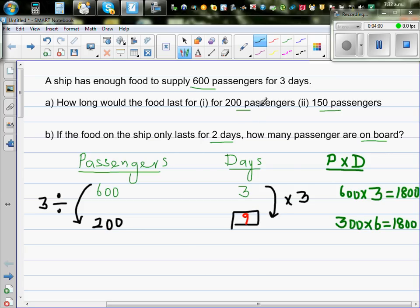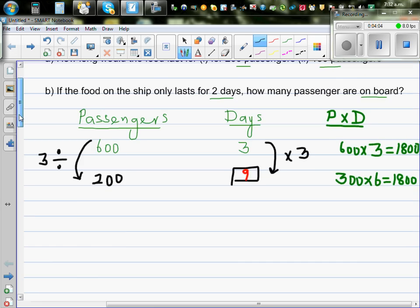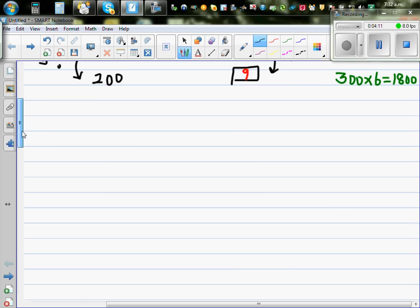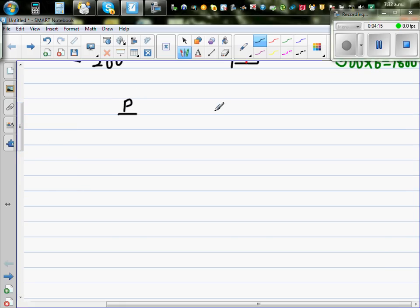So the next question, if there are 150 people. Passengers and days. We know for 600 passengers, it lasts for 3 days. Now the question is, if there are 150 passengers, it will last for how many days? So now you have to think, this is how many times of this? 150 goes in 600 how many times? That is, 150 times 4 is 600. So you have to divide this by 4. So 600 divided by 4 is 150. So as this is an inverse proportion, here you have to multiply by the same number. So there are 12 days. This lasts for 12 days.